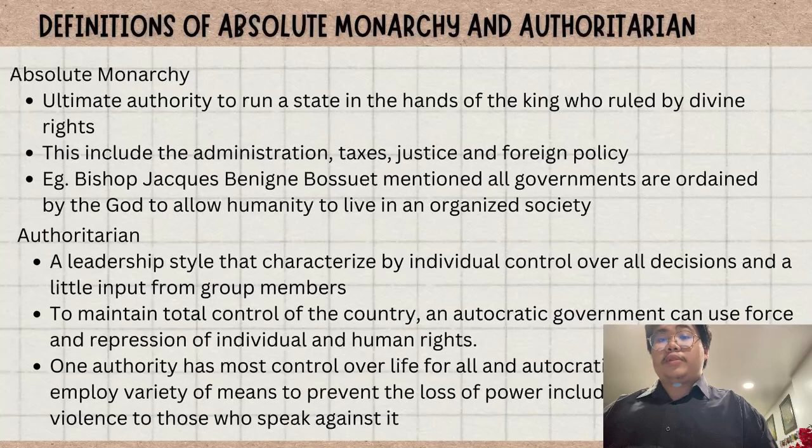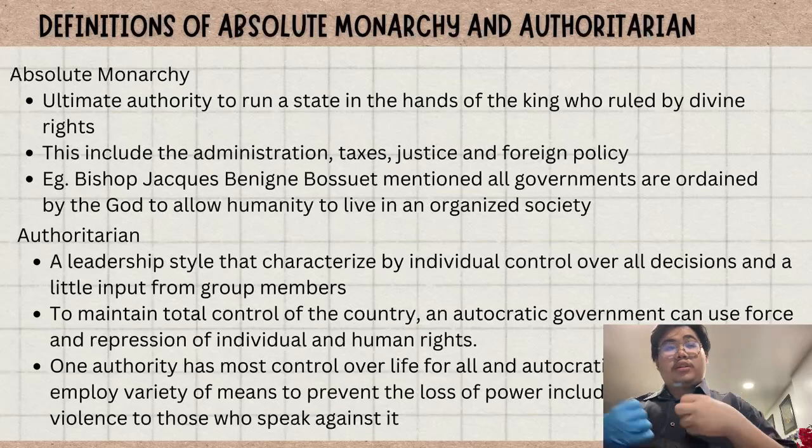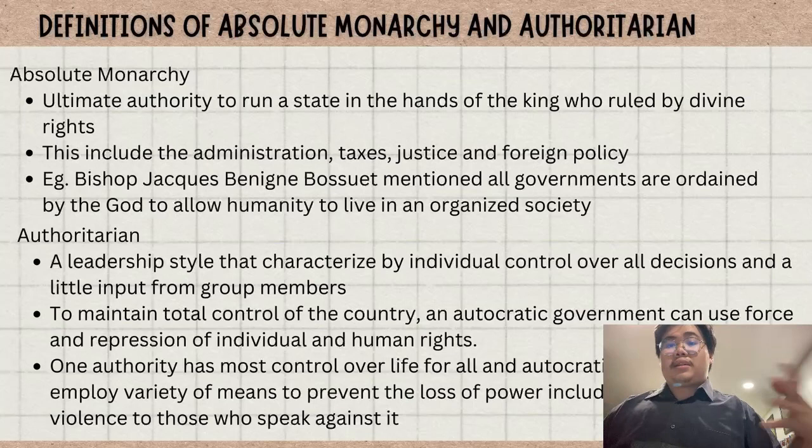The definition of absolute monarchy is that ultimate authority to run a state is in the hands of a king ruled by divine right. This divine right is given to his position by some higher power. The authority of this monarchy includes areas of administration, taxes, justice or judicial, and foreign policy.